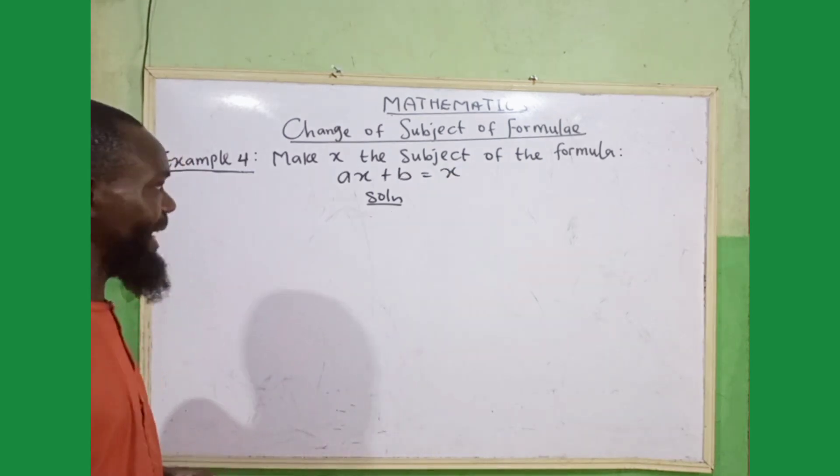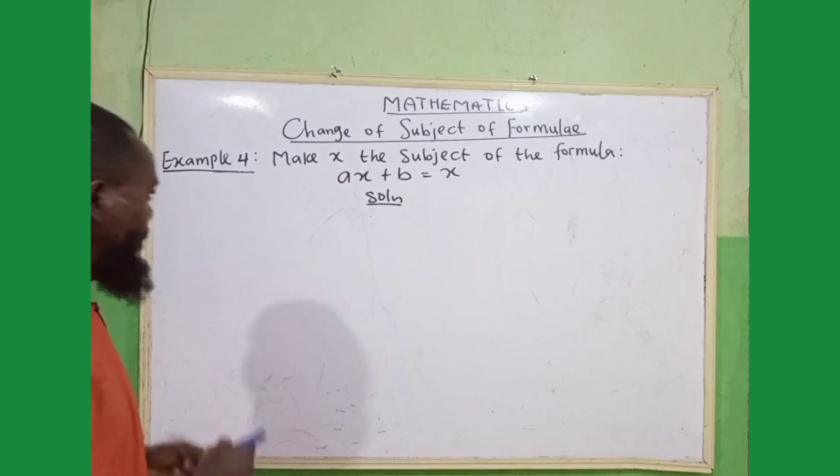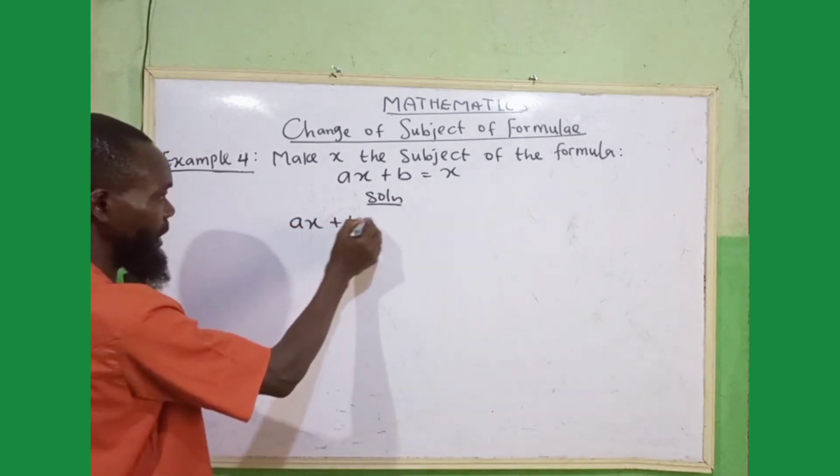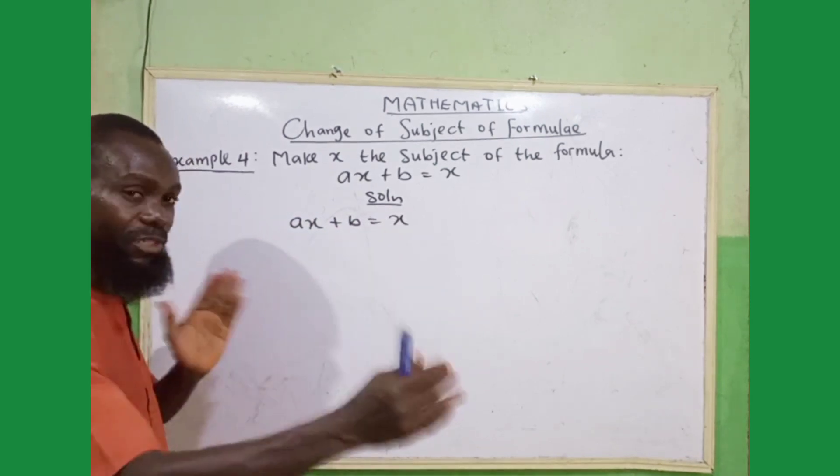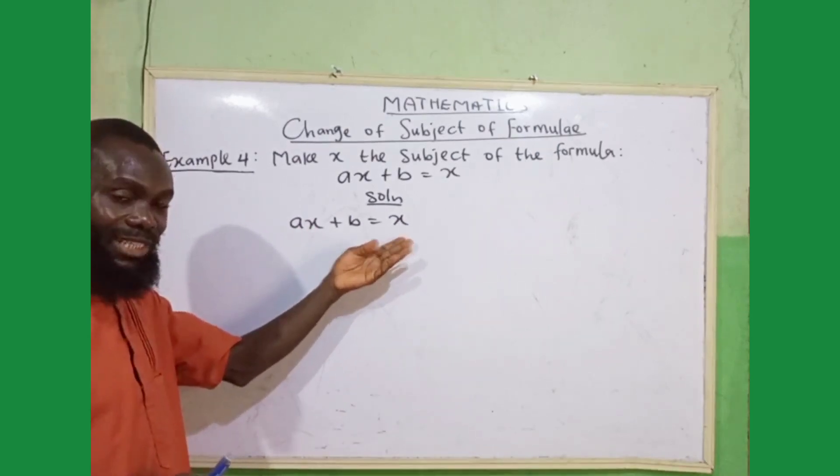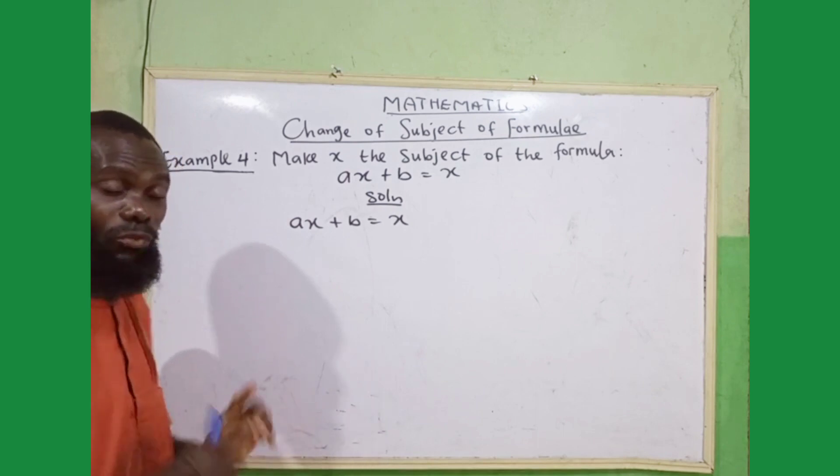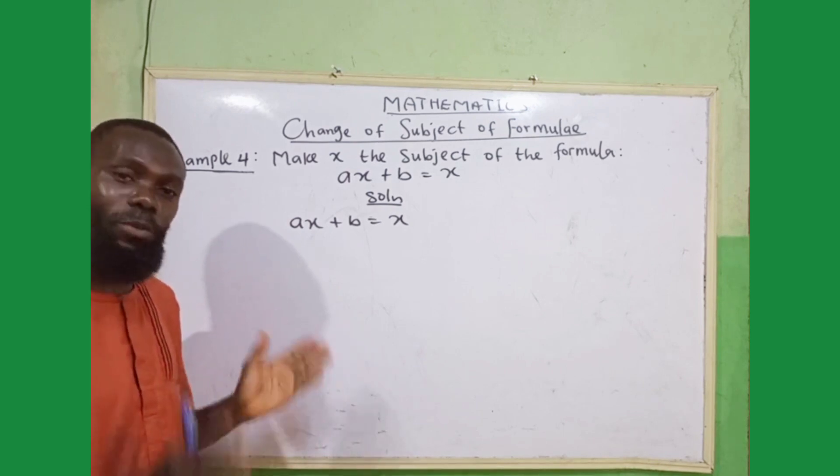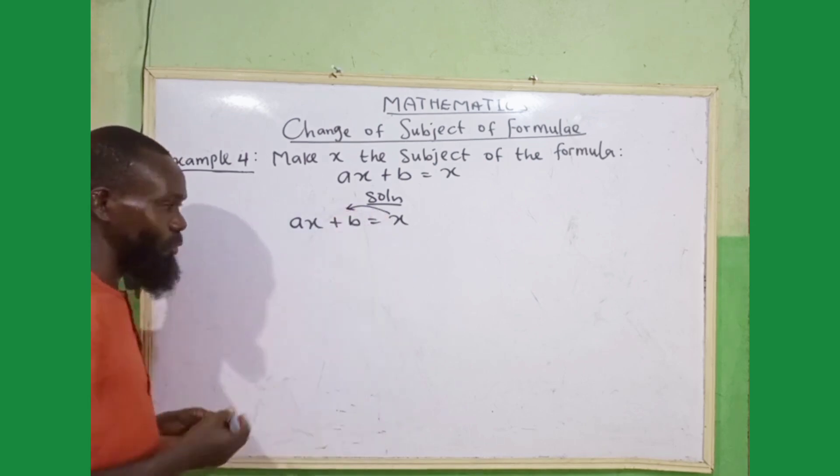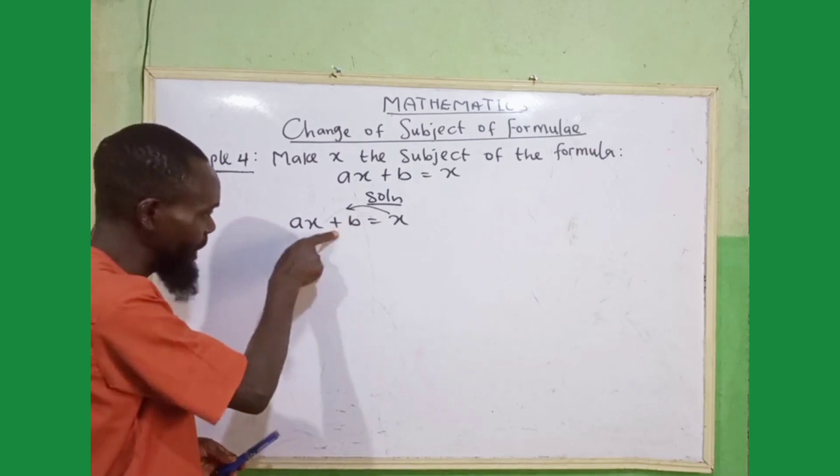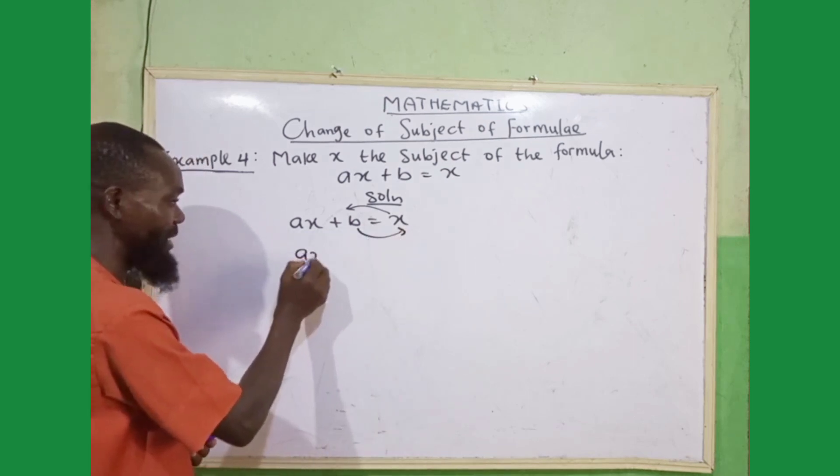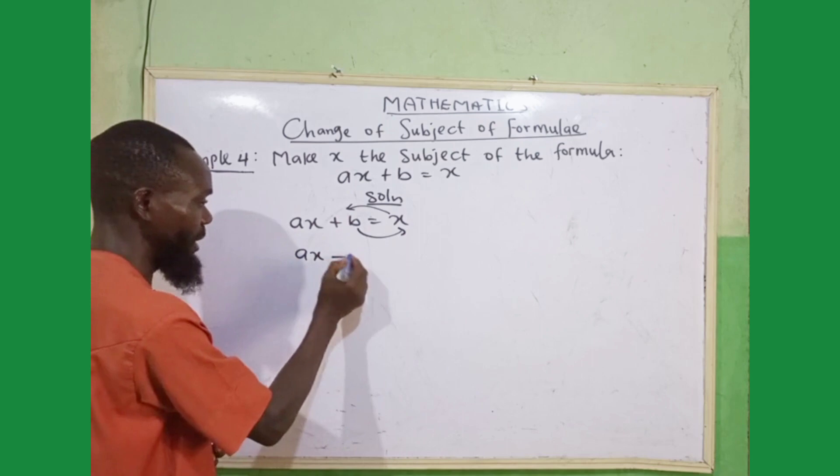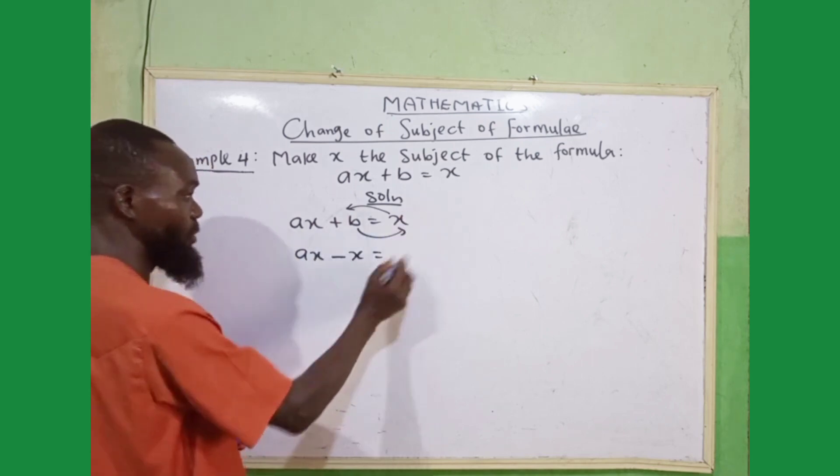Example 4. Make x the subject of the formula ax + b = x. Now, we want to make x the subject of the formula. And my x are in different positions. One is at the left hand side, the other is at the right hand side. The first thing is to take them together. And don't forget, I said, always let the unknown be at the left hand side. Meaning, this x has to come in. When the x is coming in, this +b, we have to move out. Because it doesn't have x. So, +b will move out. I'm going to have ax. When this one is coming in, it becomes -x = -b when +b is going out.